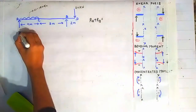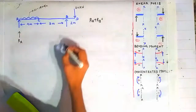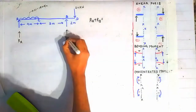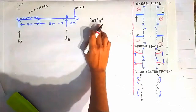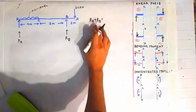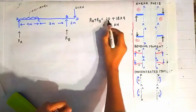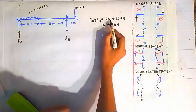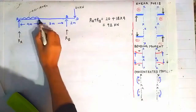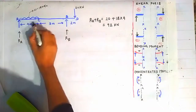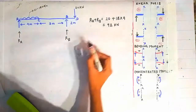The first step is always to select the reactions: at point A acting in the vertically upward direction, and the reaction at point B also acting in the vertically upward direction. We know that Ra plus Rb is equal to the net vertical load acting on this beam, so Ra plus Rb equals 20 kN plus 18 (the intensity of the UDL) into 4 meters, which gives us 92 kN.